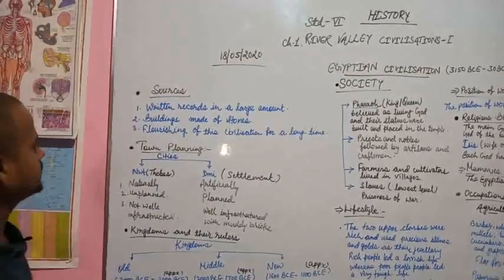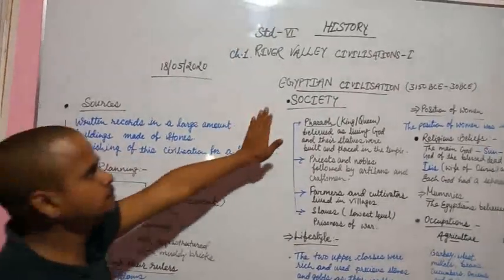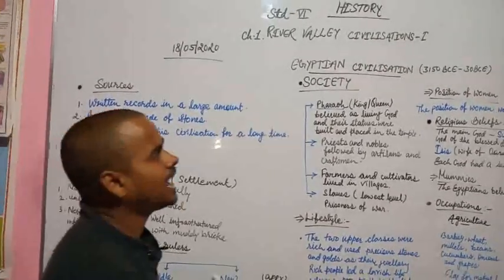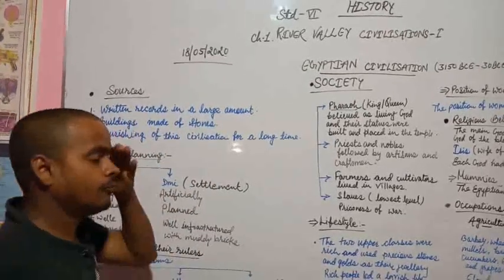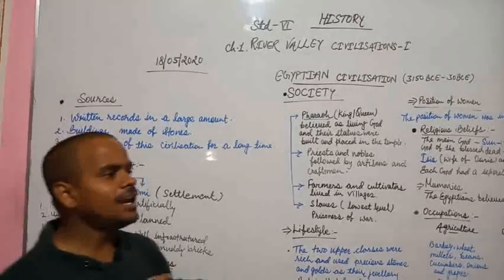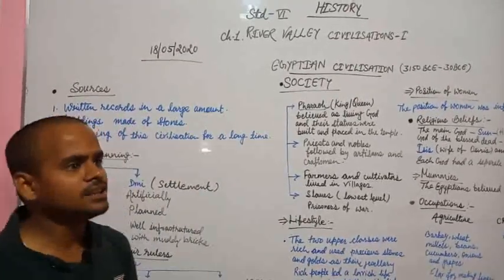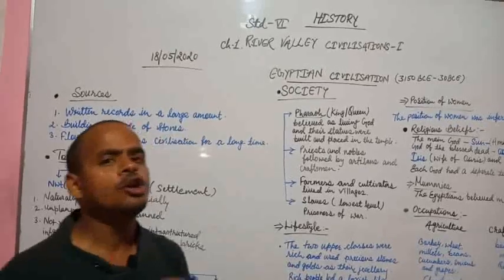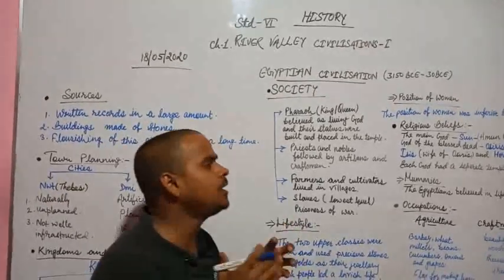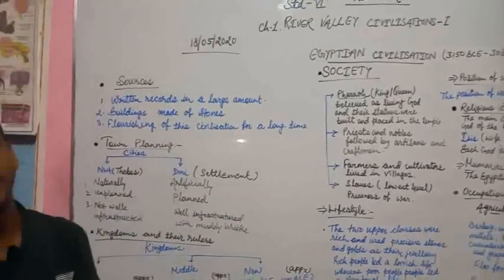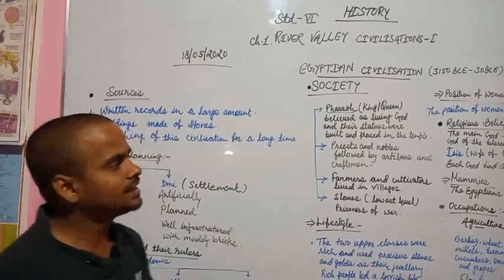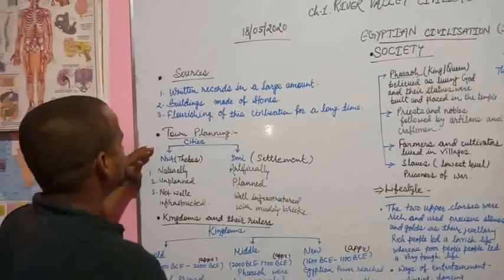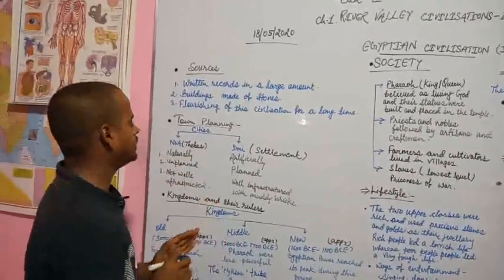About their town planning. First of all, Egyptian civilization developed near the bank of river Nile and it is considered as the gift of river Nile that helped in the fertility of the soil and agriculture. There were two cities, or you can say two territories were found in that civilization.